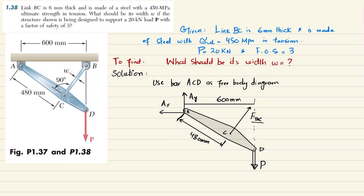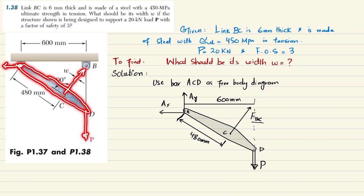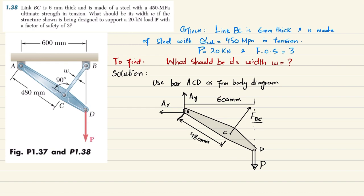Let's start with the solution. Due to this load, the force that link BC acts on member AD will be in this direction, and since there is a support, there will be reactions Ax and Ay. I have already drawn the free body diagram, referenced from problem 1.37. We will find the load acted upon by link BC on member AD.